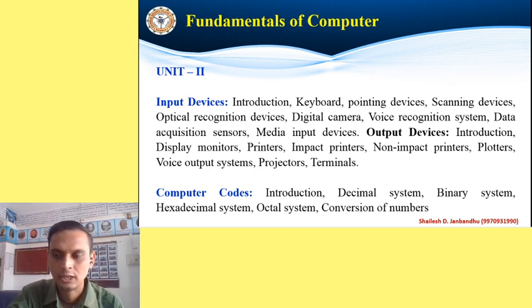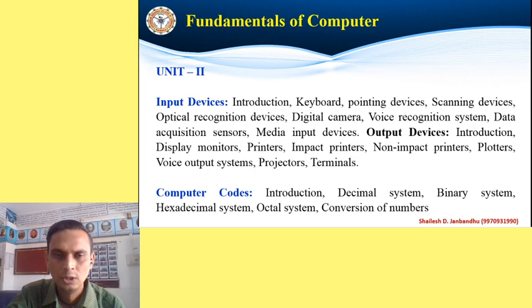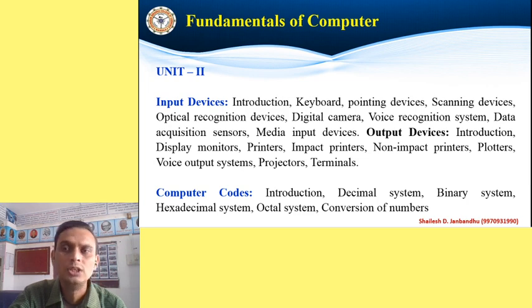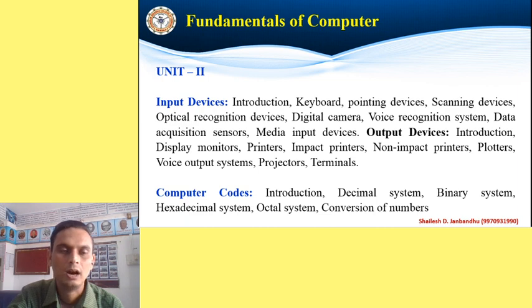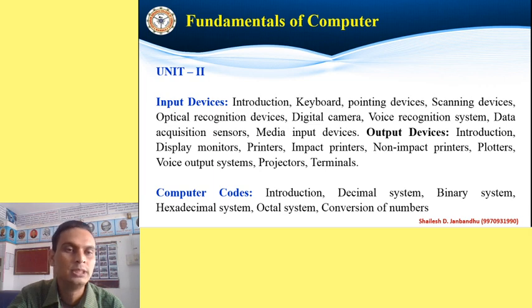Pointing devices: mouse is a pointing device, touch screen is a pointing device by which we can touch a specific point on our monitor or screen. Joystick is also a pointing device. Scanning devices: a scanner is used to scan a hard copy and convert it into soft copy. Scanning means transferring from hard copy to soft copy. Any printed material is called a hard copy, and whatever is on your desktop, laptop, or mobile screen is called a soft copy.